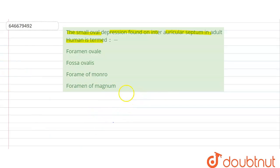Where is it present? Let's draw. So we have the four-chambered heart over here. This is the right side, that is the right atrium, then we have the left atrium.